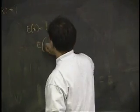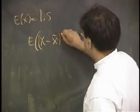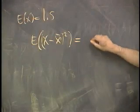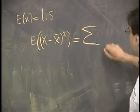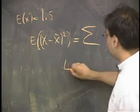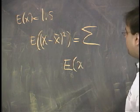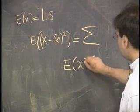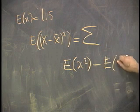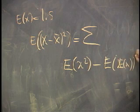The expected value of x minus x bar squared, that's the variance, and that's equal to the sum. It actually turns out to be the case that, in the book, you'll actually prove this, that it's the expected value of x squared minus the expected value of x squared, I believe, right?